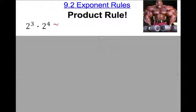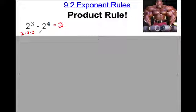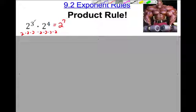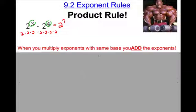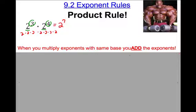Let's look at this: two to the third times two to the fourth. Maybe you know this already — it's two to the what power? I had you expand them last time and I did not show you the shortcut. When you expand these, it's all multiplication. You can see it's two to the seventh. The rule is: you take these two exponents and add them together. When you multiply exponents with the same base — they both have a base of two — you add the exponents. Three plus four is seven.